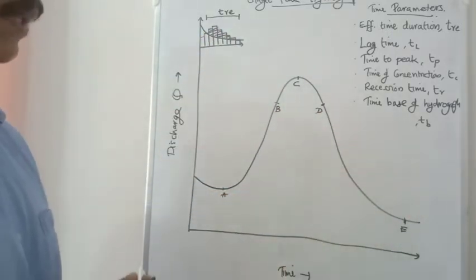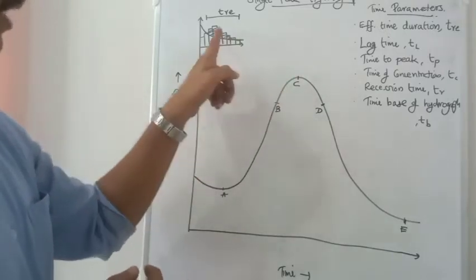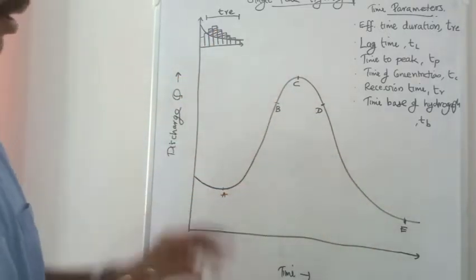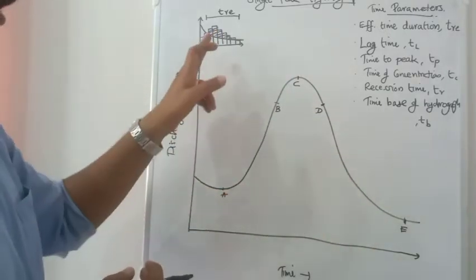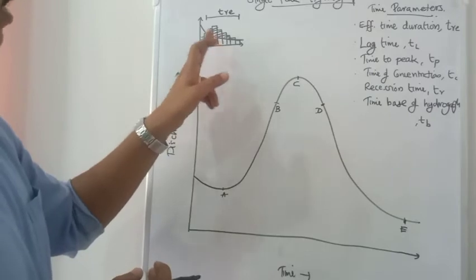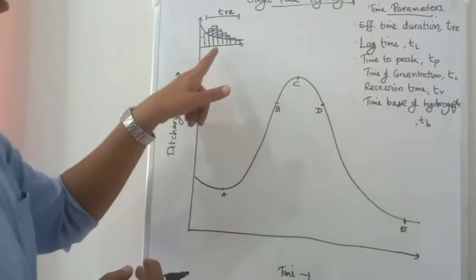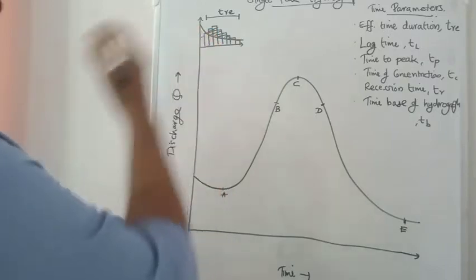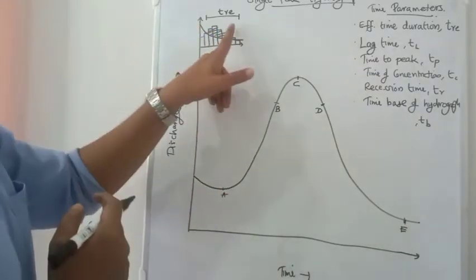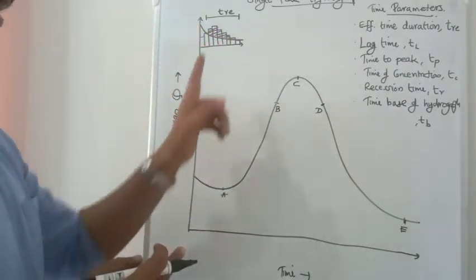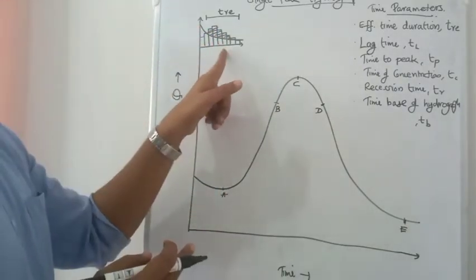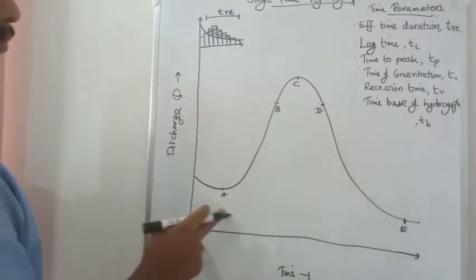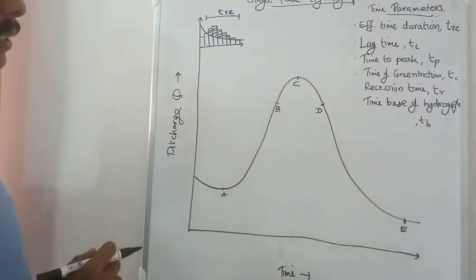For example, this is a single peak. The shaded portion represents the same precipitation amount. So TRE is the effective time duration of the precipitation. Infiltration is not the same as runoff duration — that is the effective time duration.